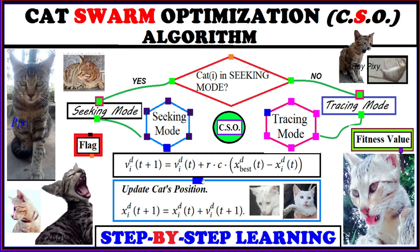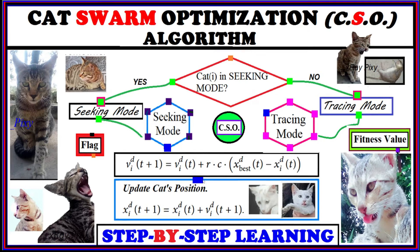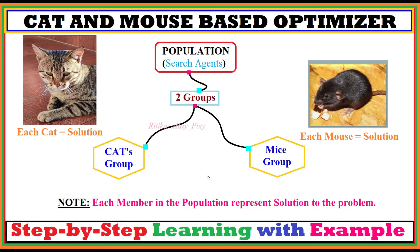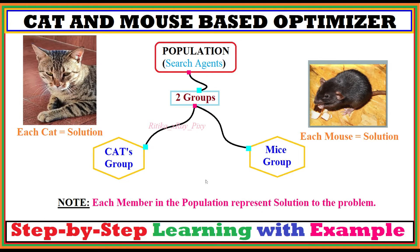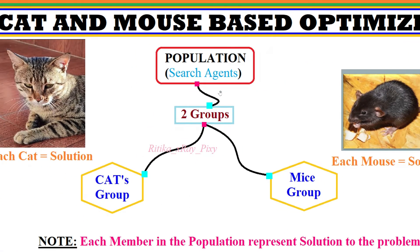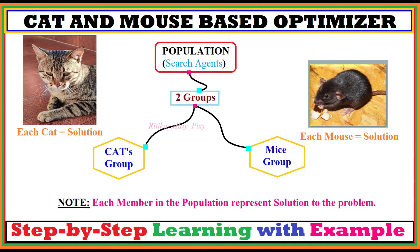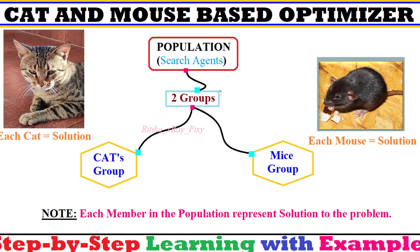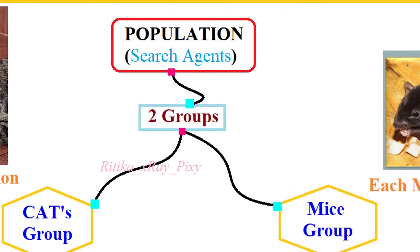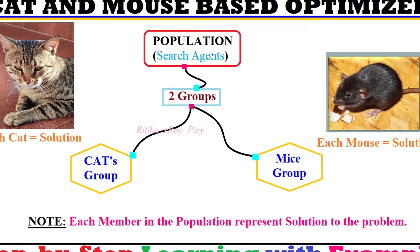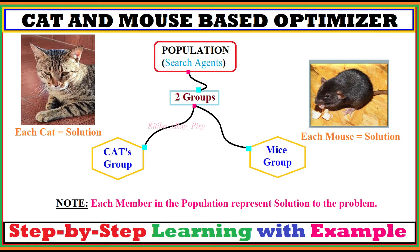A few facts about cats were already discussed in the Cat Swarm Optimization Algorithm — a link is given in the description or comments for more details. Now we will try to understand how the Cat and Mouse Based Optimizer works. Like all population-based metaheuristic optimization algorithms, we first have a population of search agents.